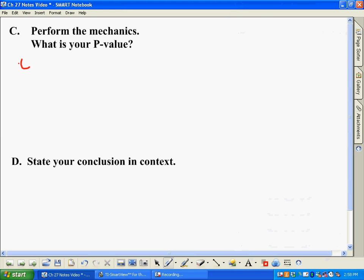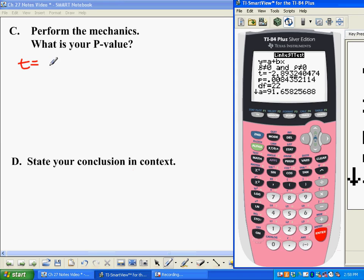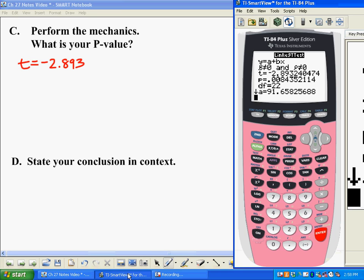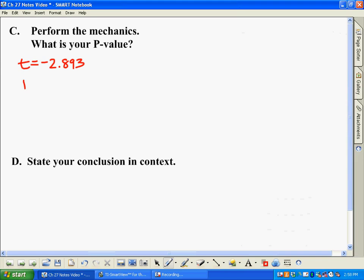So for instance, we now know T. T is negative 2.893. We also know, going back here, we know P, and we know degrees of freedom. So P is .0084. We also know degrees of freedom is 22. Now why is that? It comes from this. It comes from N minus 2. Well how many students did we have? We had 24, and 24 minus 2 would be 22. So these are all things that will come out of the calculator for us here, and there's other things too.